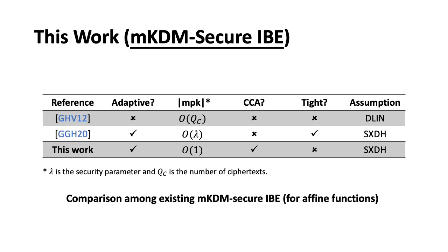In the context of IBE, our generic framework also gives us a new IBE schema with mKDM security. Our schema enjoys a constant size master public key and achieves adaptive and CCA security. In the following, we will employ this simple predicate, the equality predicate in IBE, to illustrate our framework.